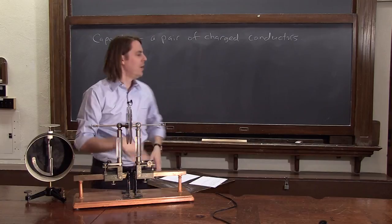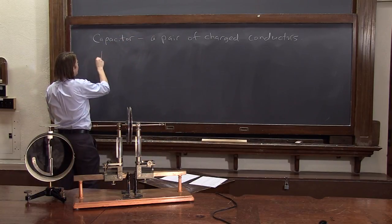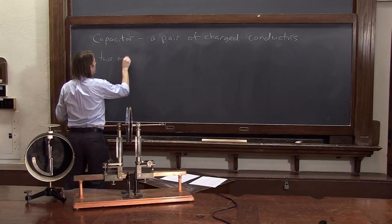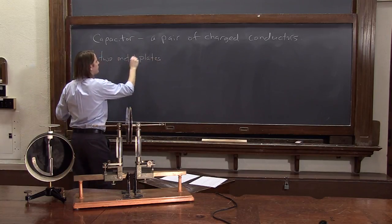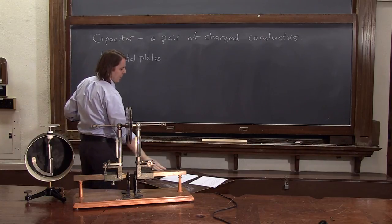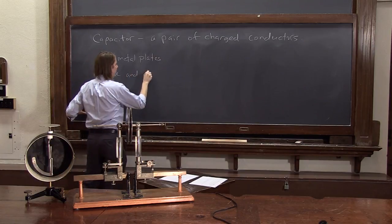And we've gone with two close parallel plates. So let's draw that and see what's going to happen inside of it. Two metal plates. And we want them to be large and close. And you'll see why in a minute.